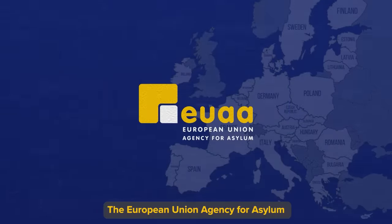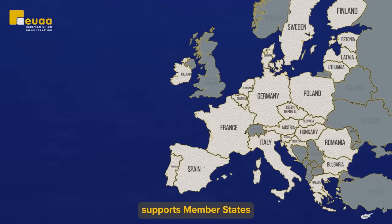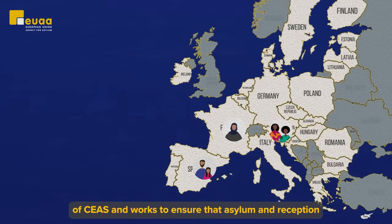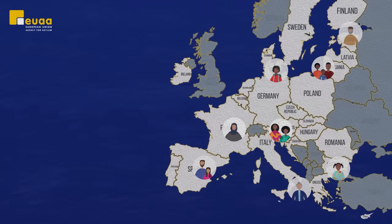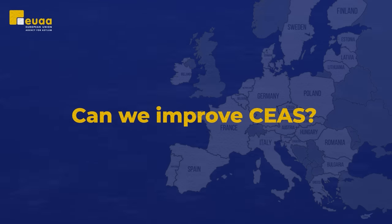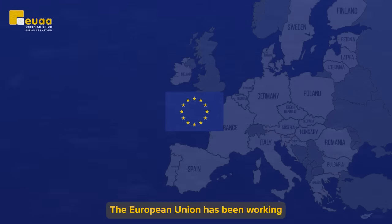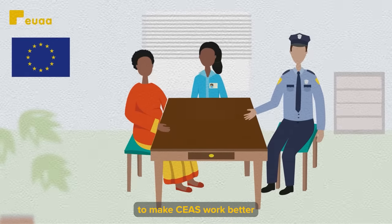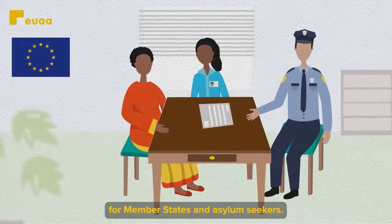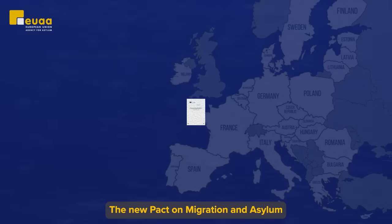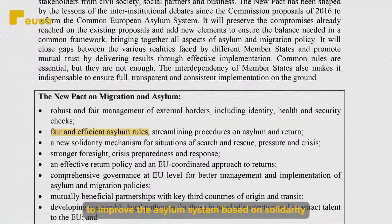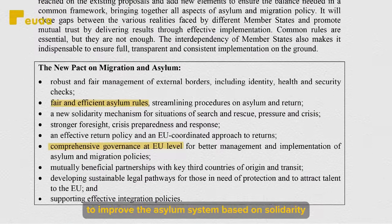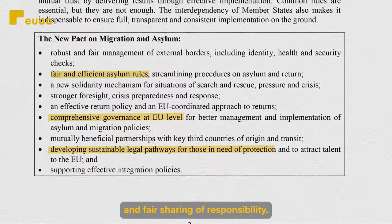The European Union Agency for Asylum supports member states with the application of CEAS and works to ensure that asylum and reception procedures are harmonized across the EU. The European Union has been working to make CEAS work better for member states and asylum seekers. The new Pact on Migration and Asylum proposes several new instruments to improve the asylum system, based on solidarity and fair sharing of responsibility.